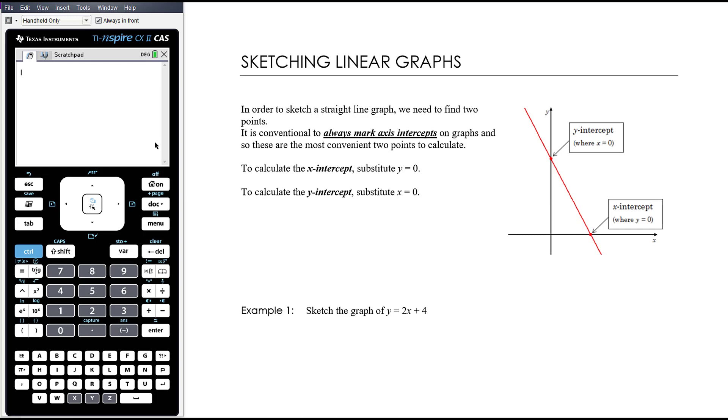In this video we want to review sketching linear graphs. In order to sketch a straight line we need two points. Two points enable us to then get out a ruler, join them up and we've got the straight line.